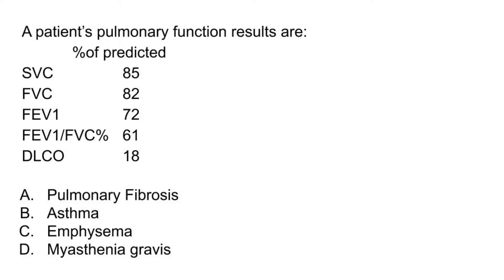In this case, it is under 70. Now if we look at the answer, there are two obstructive disorders: asthma and emphysema. There is only one obstructive disorder that has a reduced DLCO, and that's emphysema. So the correct answer is C, emphysema.